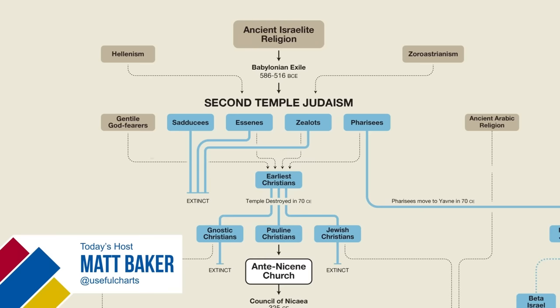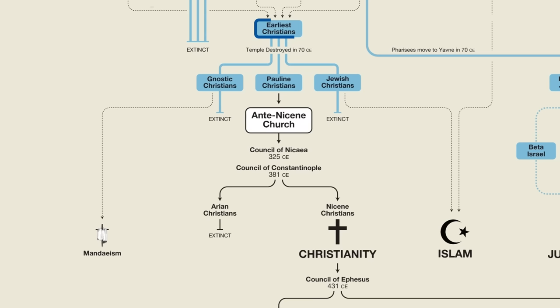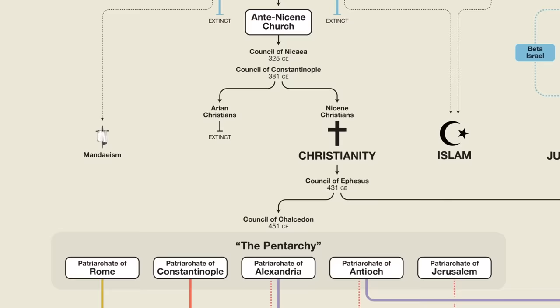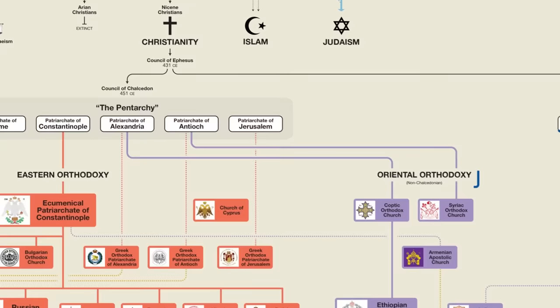In Episode 1, we looked at the origins of Christianity — how it started off as a sect of Judaism but then went on to become a separate religion. We then discussed the first two church councils, which clarified the major beliefs of Christianity and produced the Nicene Creed. Finally, we looked at the next two councils where some smaller branches of Christianity split off, such as the Church of the East and the Oriental Orthodox Churches.